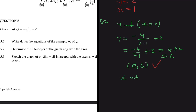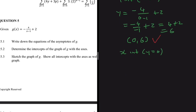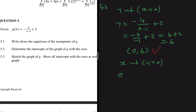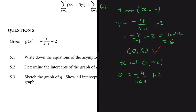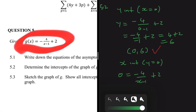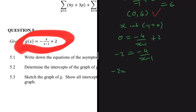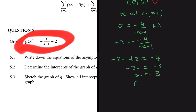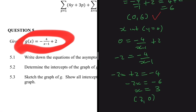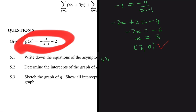For the x-intercept, y equals 0. Substituting into g(x): 0 equals minus 4 divided by (x minus 1), plus 2. Subtracting 2 from both sides: minus 2 equals minus 4 divided by (x minus 1). Cross-multiplying: minus 2x plus 2 equals minus 4, so minus 2x equals minus 6, giving x equals 3. The x-intercept is (3, 0).